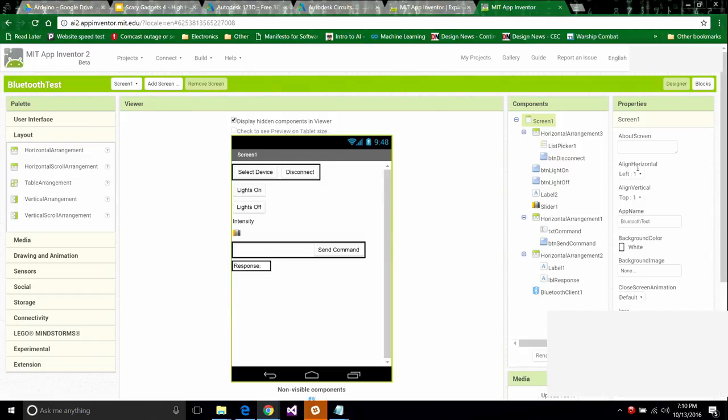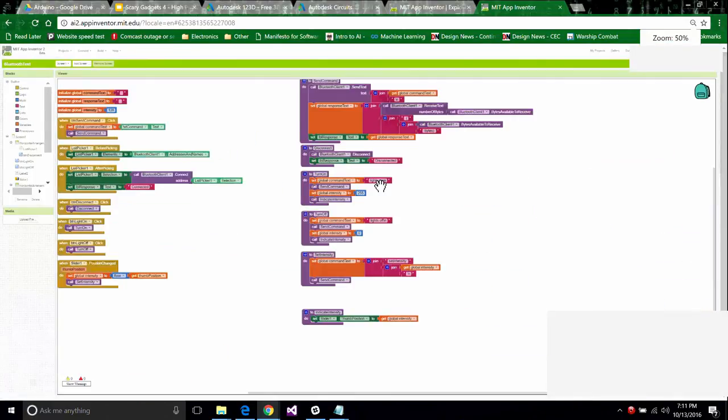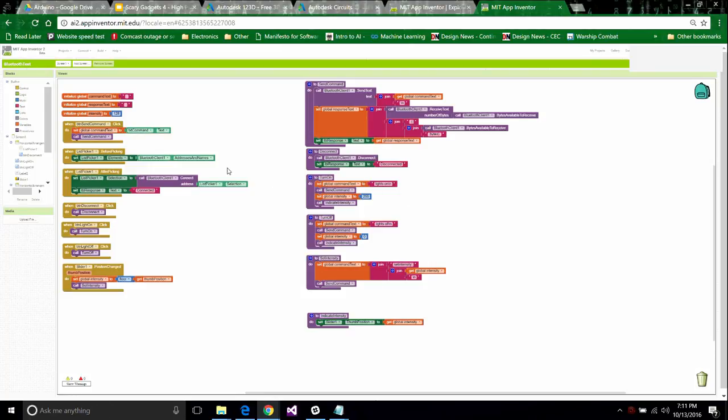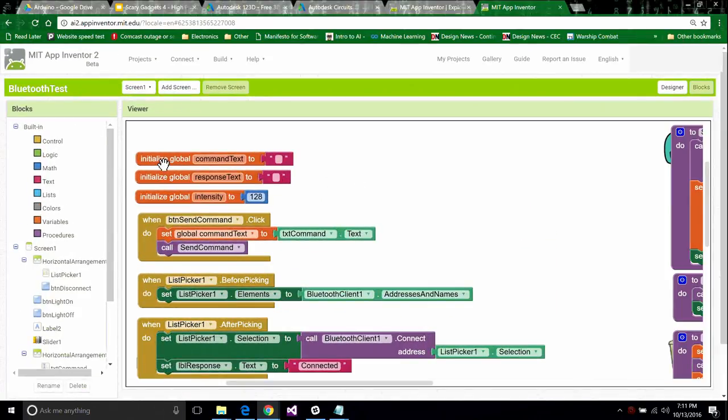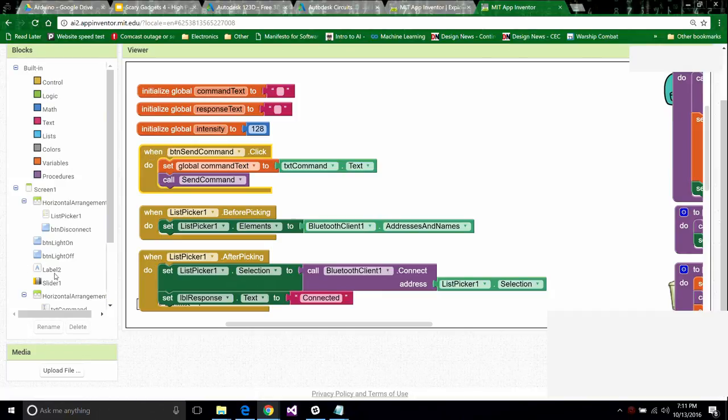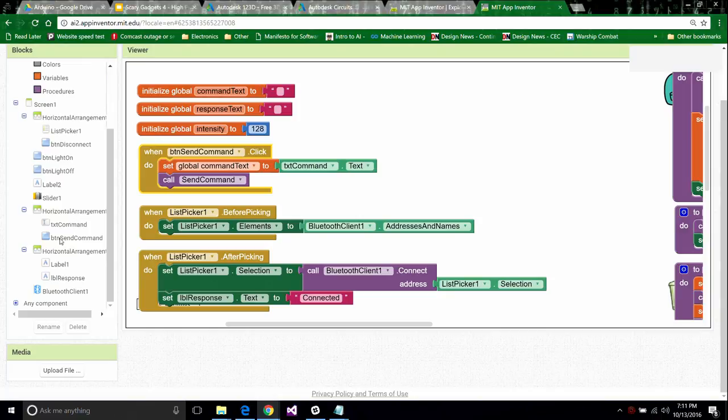I can change some of the properties over here, like the text and the name. I have mostly left all of the names alone, except where I have two buttons. Labels I haven't renamed. Slider I haven't renamed. But what this application will do is I've put on buttons that have functions that I want to perform with a Bluetooth connection to my Arduino. The select device is really a connect button, but it'll ask you which Bluetooth device to connect to.